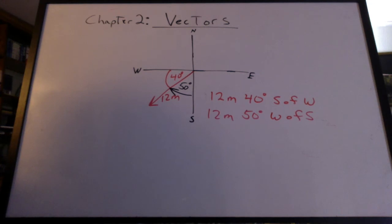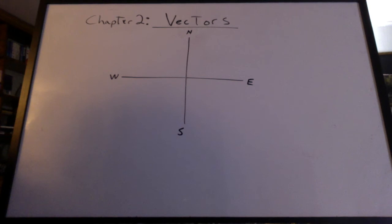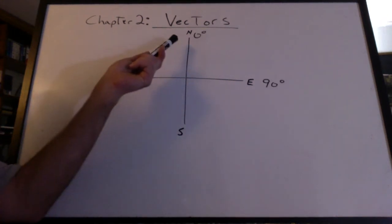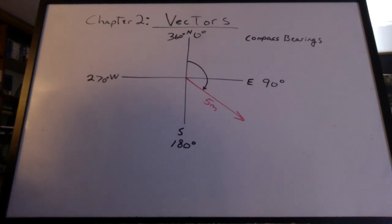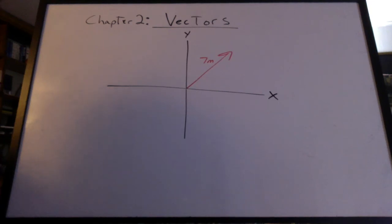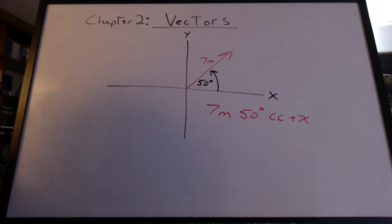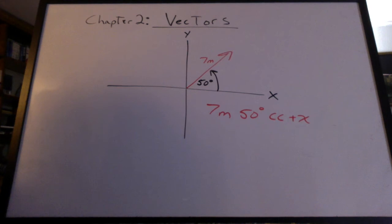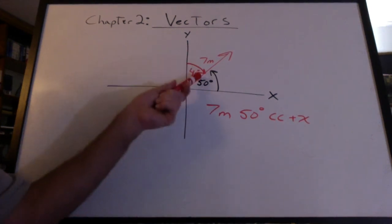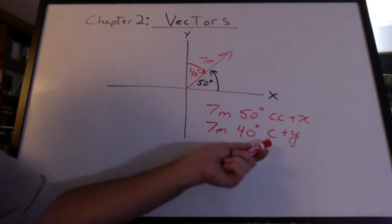There's another way of using the compass to help us identify the angle. At north the compass reads zero degrees; at east it's 90; south 180; west 270; and back at north it's 360. We could use these numbers as compass bearings to tell us the direction of a vector — about 135 degrees compass bearing, starting at zero and reading around to the vector. We could also do it the way they do in math class: start at the x-axis and rotate counterclockwise. If that angle is 50 degrees, the vector is 7 meters, 50 degrees counterclockwise from the positive x-axis. Or starting from the y-axis, that would be 40 degrees — 7 meters, 40 degrees clockwise from the positive y-axis.